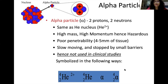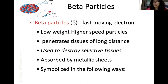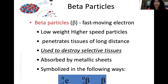Beta particles are actually electrons emitting from the orbit of the element. As electrons are fast-moving with negative charge, small mass, and low weight, their penetration frequency is high. Beta particles penetrate tissue to a long distance. That is why they are used to destroy selective tissue and are mostly used for therapeutic purposes. They are absorbed by a metallic sheet.